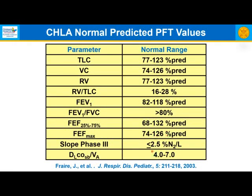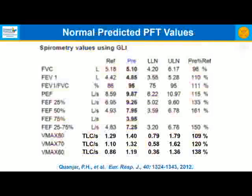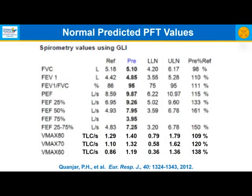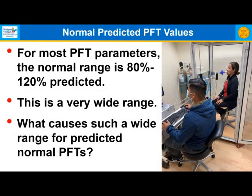These are the Children's Hospital Los Angeles normal predicted values used for some time, mostly in that range of 80 to 120%. In the pulmonary function printout at Children's Hospital Los Angeles, we have the parameters, the reference value (predicted based on age, height, and gender), the measured value prior to bronchodilator calculated as percent predicted, and based on the Global Lung Initiative, a lower limit and upper limit of normal. This gives an idea of how the patient is doing relative to a predicted normal individual of the same age, height, and gender.